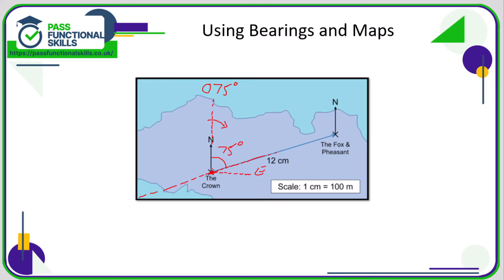If you need to work out the bearing of The Crown from The Fox and Pheasant, you could either measure this angle here, or if we know that the bearing of The Fox and Pheasant from The Crown is 75, then the bearing of The Crown from The Fox and Pheasant is the opposite of 75.